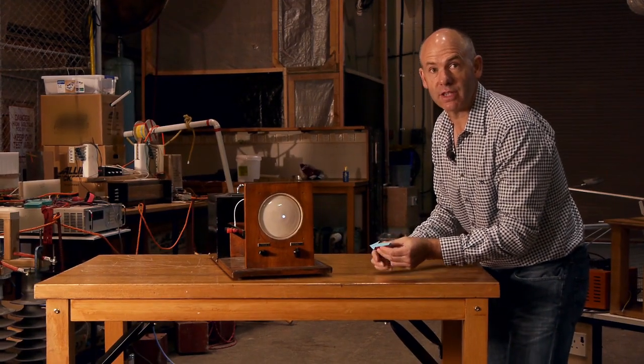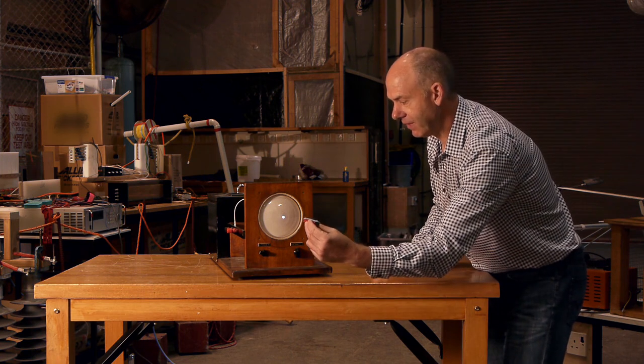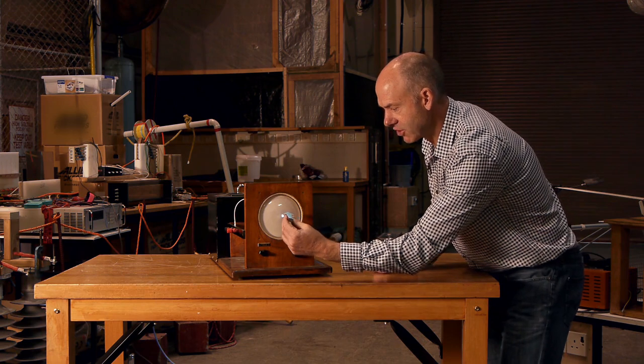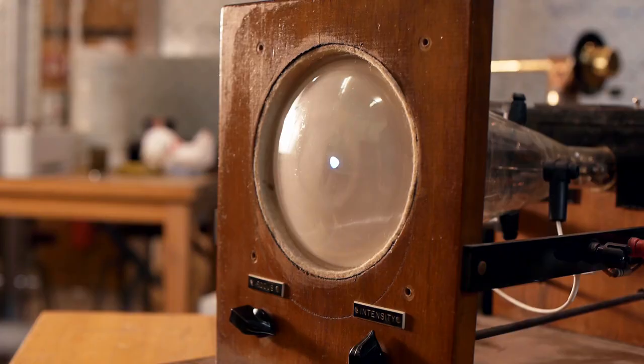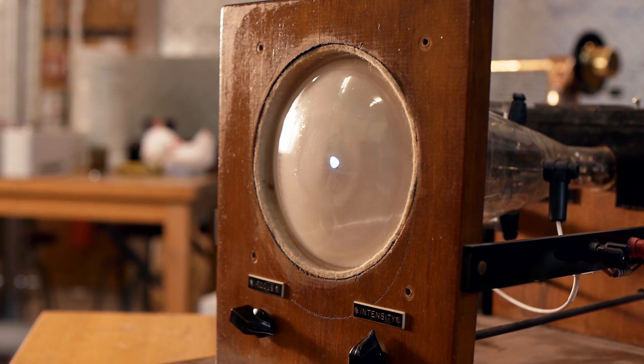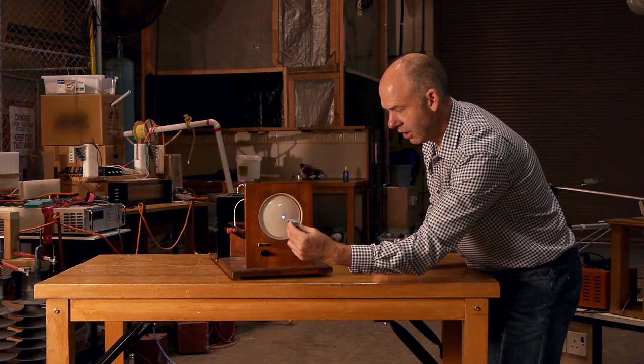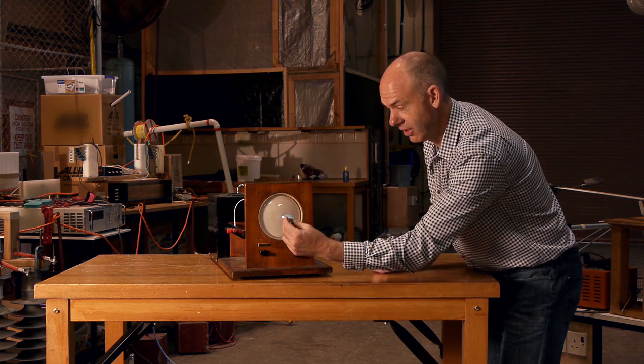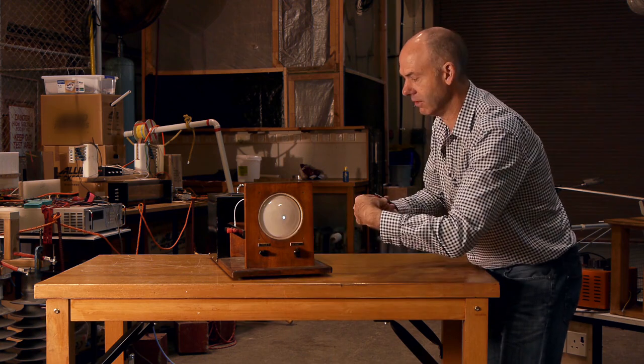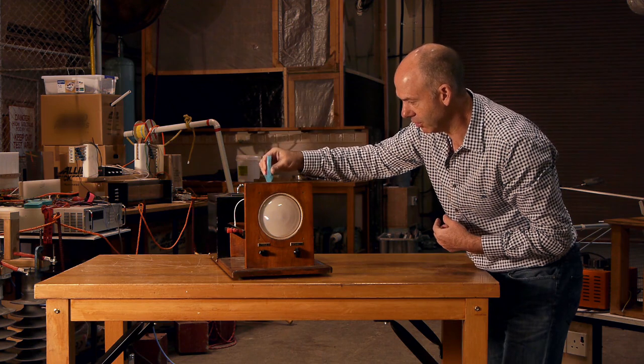So it's really important that the magnetic field is at right angles to the direction that the electrons are travelling. If I bring the field along the same direction that the electrons are travelling, you can see that there is no deflection. You only have deflection if you have magnetic field at right angles to the way the electrons are moving.